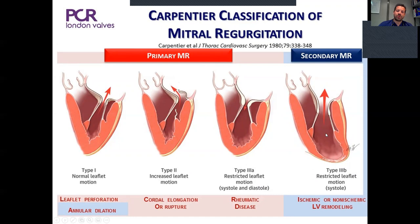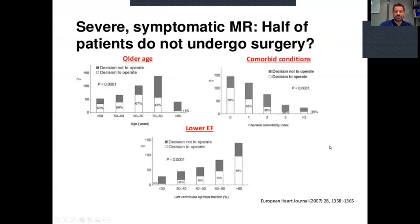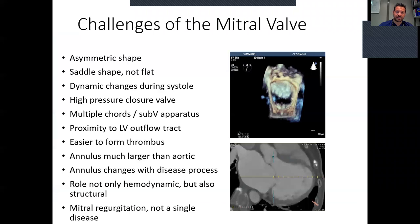When we talk about secondary MR, we know that we have a diseased left ventricle and tethering of the leaflets towards the apex, and it is not an actual pathology of the mitral valve. Unfortunately, half of the patients suffering from mitral regurgitation are considered inoperable due to older age, comorbidities, and low ejection fraction. By 2040, MR incidence will more than double, and the need for solutions for these inoperable patients is great.